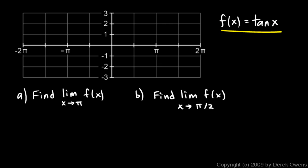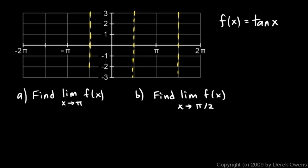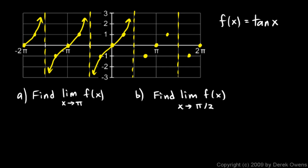Here's another example. The function is f of x equals the tangent of x. The tangent function has vertical asymptotes at pi over 2, at 3 pi over 2, and at negative pi over 2. It goes through the origin, and when x is pi over 4, the value is 1. I'll plot a few of these points to help sketch the curve neatly. These are vertical asymptotes, and you should have a clear mental picture of the tangent function from previous studies of trigonometry.